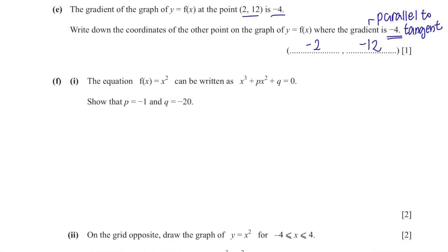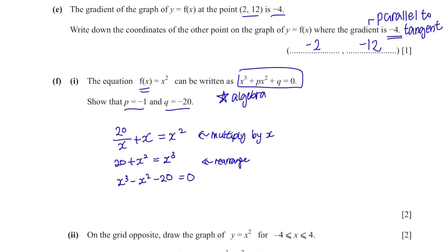Part F. The equation f(x) equals to x square can be written as x³ + px² + q = 0. Show that p equals to negative 1 and q to negative 20. Here's the confusing part. We've been just using the graph above so you might think that it's related to the graph but it's just simple algebra. This is the equation of f(x) and they set it equals to x square. Well, rearrange it to make it look like this equation. And compare each value and it automatically proves it.